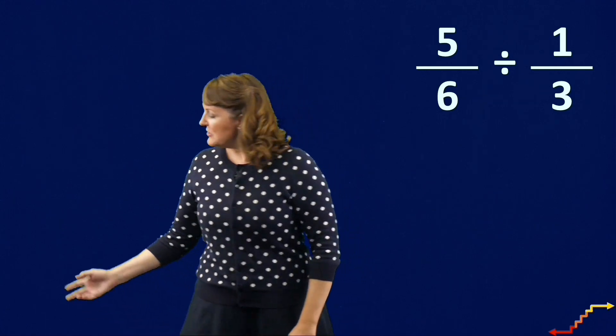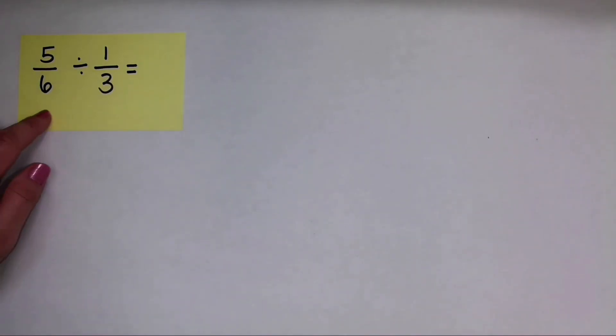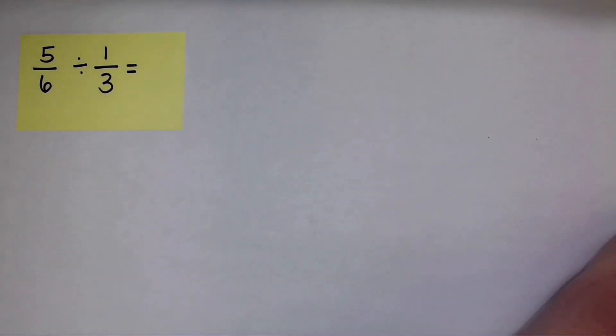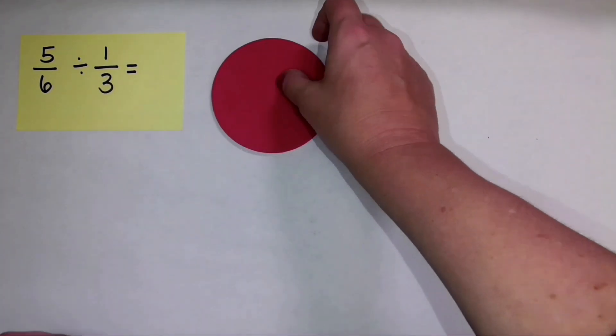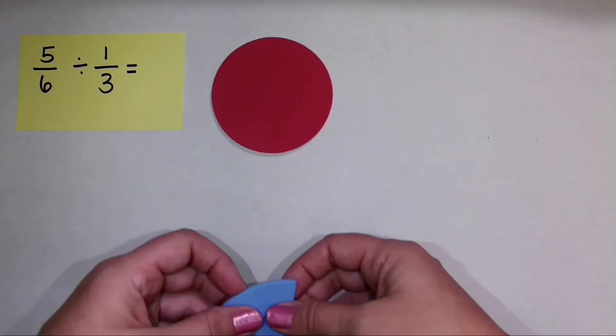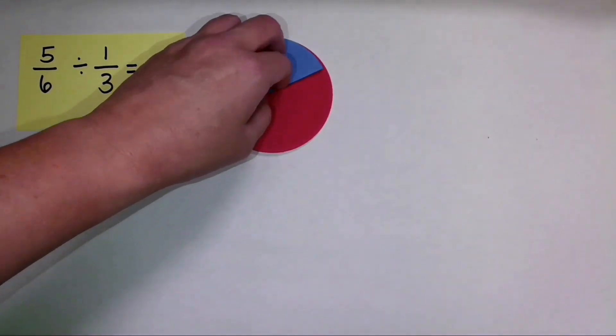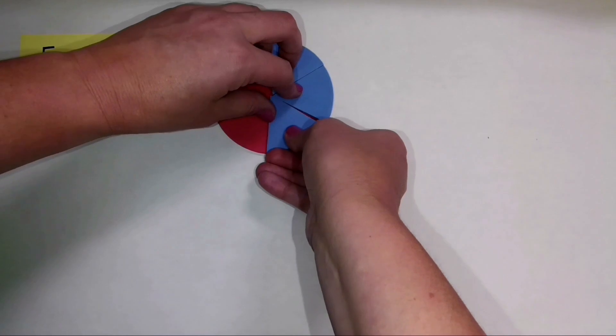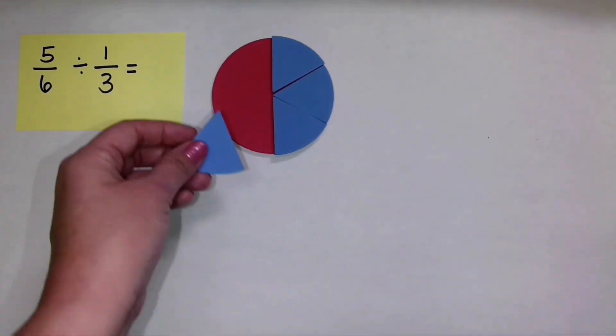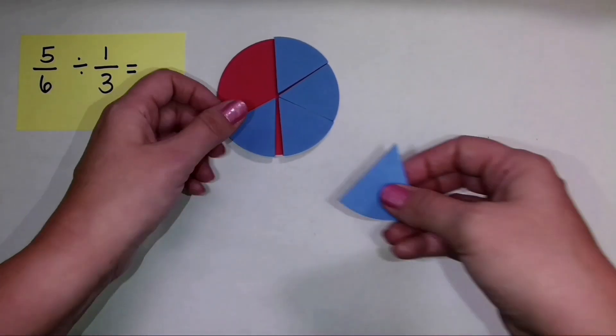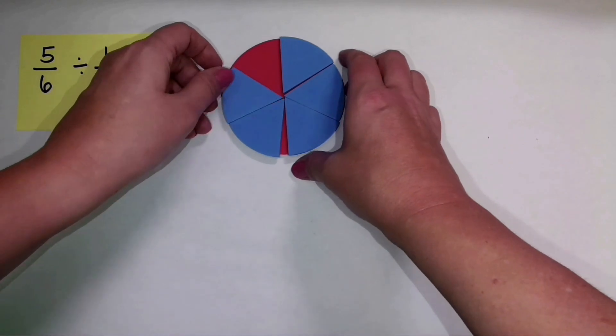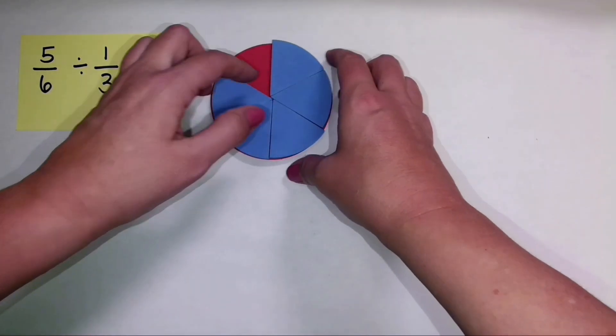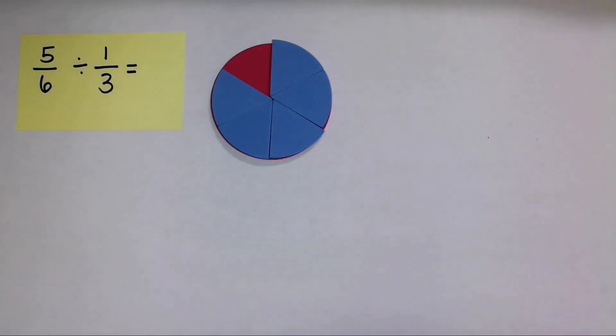So let's see what this looks like with our fraction circles. So here's my problem over here. I have five-sixths divided by one-third. So I'm going to show five-sixths. So I'm going to get out my fraction circle, and I'm going to show five-sixths of this area as filled by these blue pieces right here. So there we have five-sixths, and it's an area divided into equal parts.